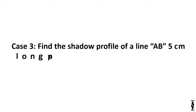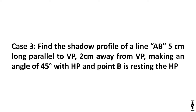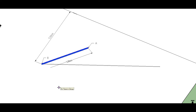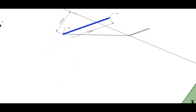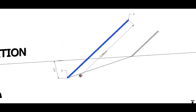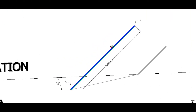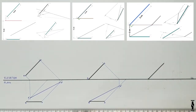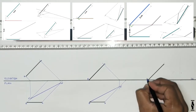Case 3: A line AB, 5cm long, parallel to VP, 2cm away from VP, making an angle of 45 degrees with HP, and point B is resting on HP. Taking a look at the 3D representation, by shifting the line towards VP so that the distance between VP and line is 2cm, we can clearly see how the shadow profile is changing. Now shadow is falling on both VP and HP. This condition might be tricky at first, but you will get used to it by practicing. So understand it very carefully.